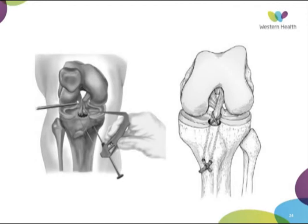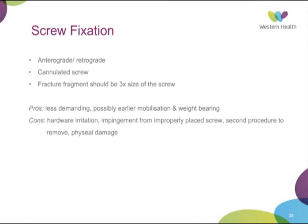Screw fixation can be anterograde or retrograde — most commonly anterograde. A cannulated screw is typically used as it allows better fixation of the fracture fragment and maintains a good reduction as the screw is inserted. The fracture fragment should be about three times the size of the screw to avoid further fracturing the fragment. Pros: less technically demanding, possibly earlier mobilisation and weight bearing, and potentially more secure fixation — though no studies have proven this over suture fixation. Cons: hardware irritation, screw pull-out, impingement if improperly placed, and potentially requiring a second procedure for hardware removal.